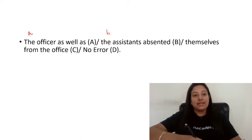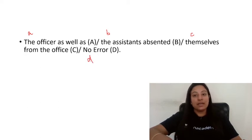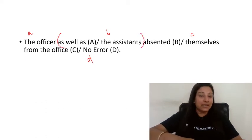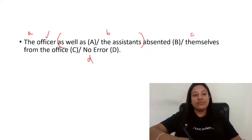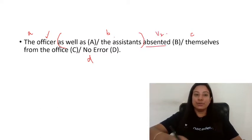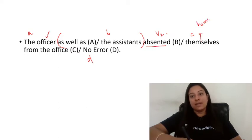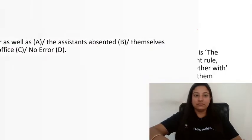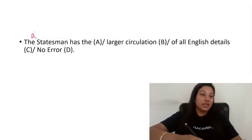Next: 'The officer as well as the assistants absented themselves from the office.' The correct answer is option number C. Whenever we use 'as well as', 'along with', or 'together with', the verb and pronoun follow the first subject. So 'himself' will come here, not 'themselves', because the first subject 'officer' is singular.